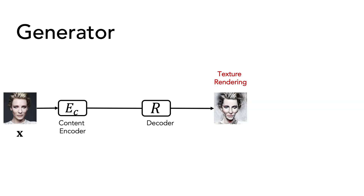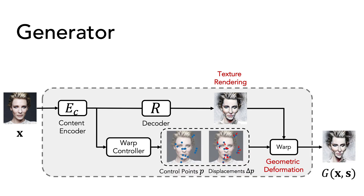The generator in WarpGAN has a pair of conventional encoder and decoder networks to render the texture of the input image to make it look like a caricature. An extra network module called WarpController predicts a number of control points and their displacements to warp the image. A differentiable warping module computes the dense deformation flow of the pixels via thin plate interpolation to deform the rendered image.